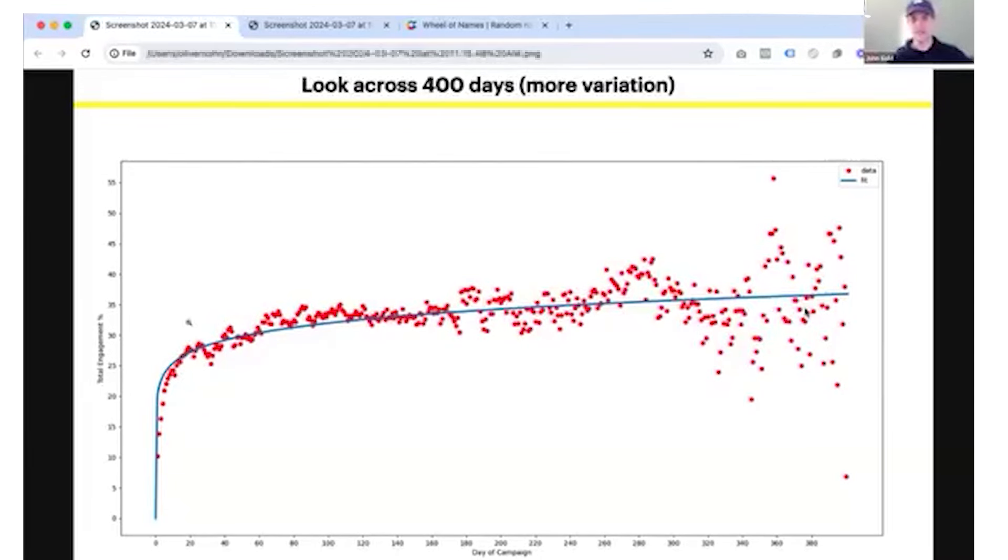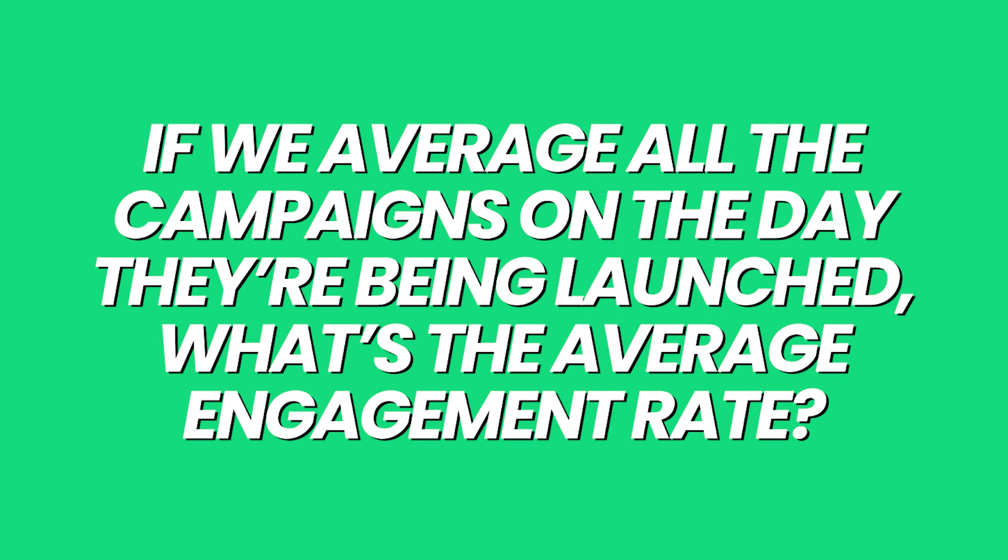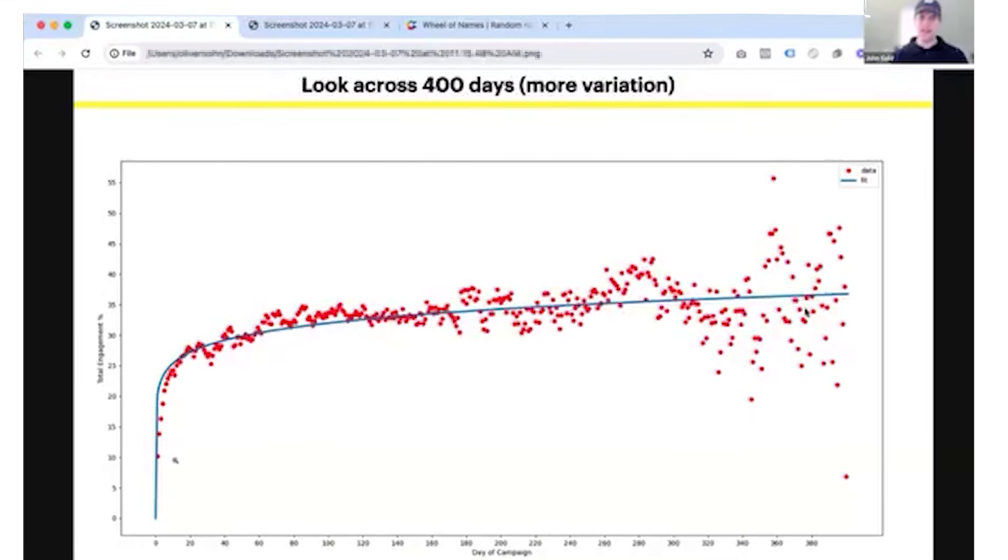The engagement percentage is something you may have seen in your Hypedit accounts. We calculate this by taking the clicks on a smart link, dividing it by the visits, and that gives us the engagement percentage. Because Hypedit sees so many campaigns, we then said, okay, if we average all the campaigns on day zero, on the day they're being launched, what's the average engagement rate? And the same for day one, day two, day three, day four.